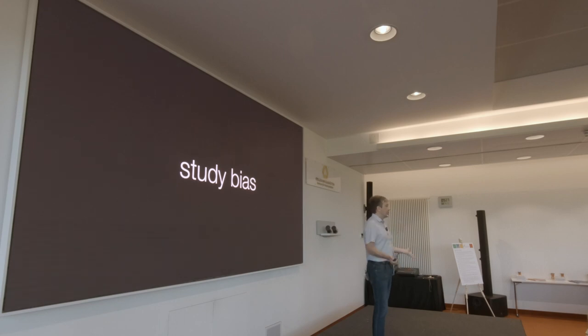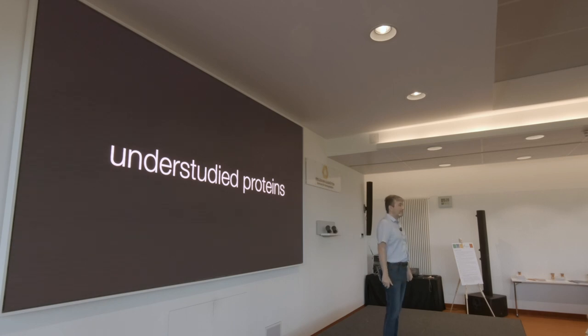And then there is the big issue of study bias. Of course, the literature is limited in terms of that it contains what we know. And what we know is based on what we've studied. So if you make a network purely by text mining the literature, then no matter how good access you have, no matter how good models you have, and no matter how good you are at identifying fake papers, you will have no interactions from the understudied proteins. So all the dark targets out there that we might be interested in, we will not have interactions for them. Because if we haven't studied them, we haven't written about them. And that leads me to the next topic.